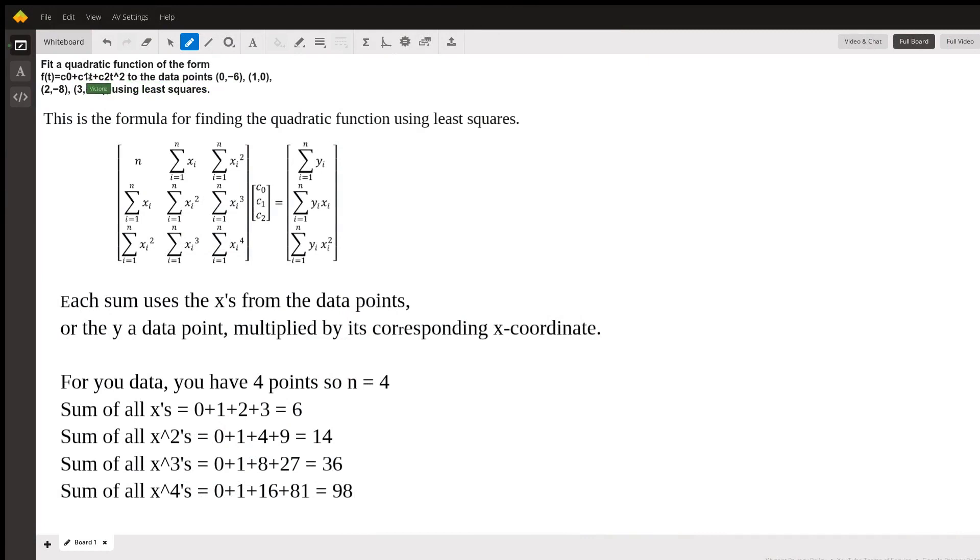Quadratic function of the form with coefficient C0, C1, and C2 with these four data points. Notice the x values are 0, 1, 2, 3, and the y values are negative 6, 0, negative 8, negative 10. And so that's what these represent.